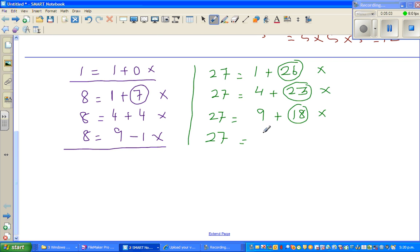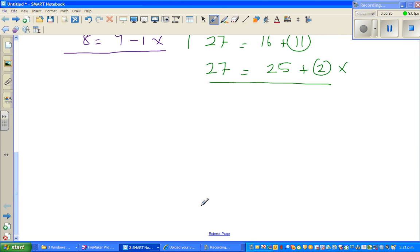The next square number is 16 plus 11, so again not working. Finally, 27 is 25 plus 2, so this is not working. None of the options work. You can't go any further because the next number is 36, then you'd have to subtract. So let me take the next cube number.